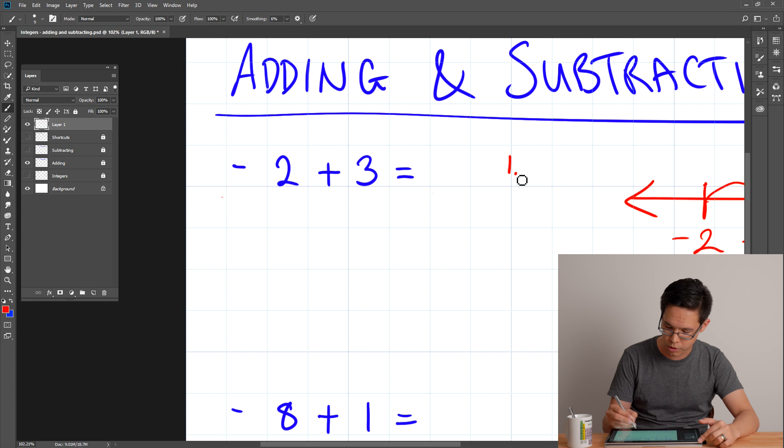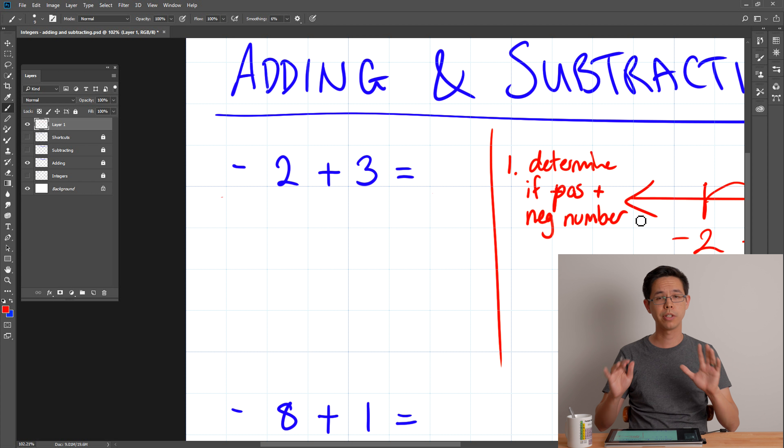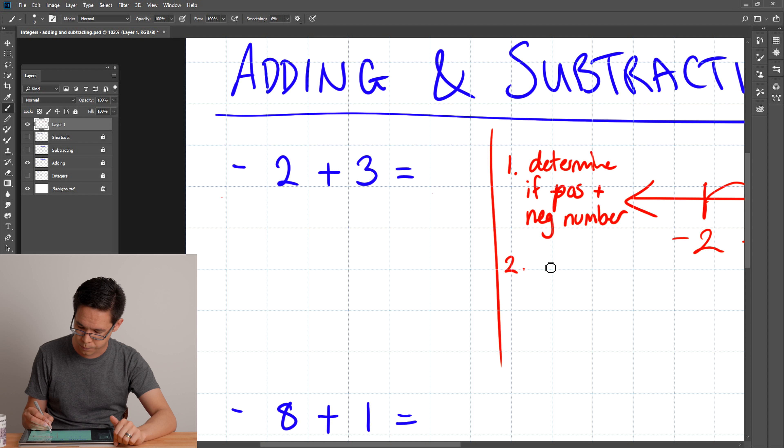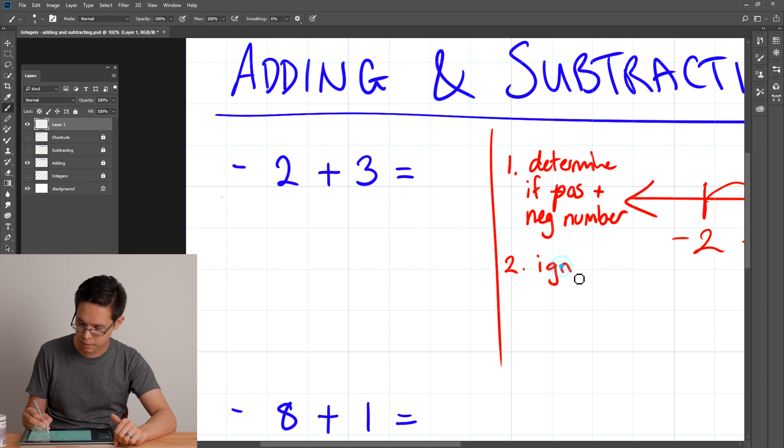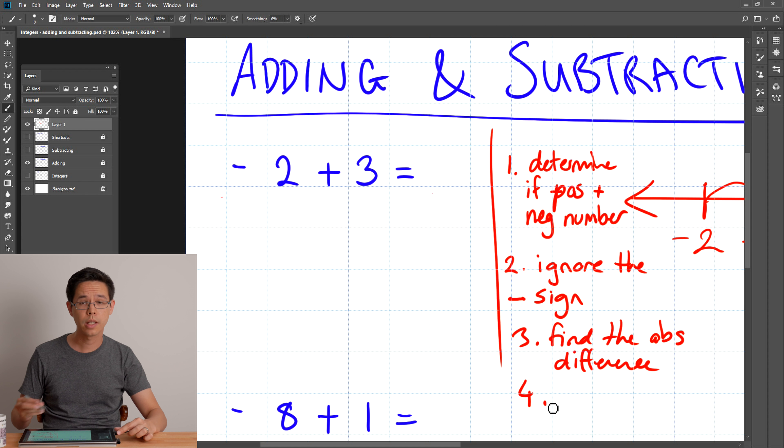The idea is to examine the problem to see if I can use this absolute difference. So first thing, if we think about the steps here, determine if pos plus neg number. So if we first determine if we are adding a positive to a negative number or vice versa, then we can go to the next step, which is my favorite part of the trick, to ignore the sign. So we can ignore the negative sign for now. Step three is we're going to find the absolute difference. And our last step to this trick is to put that negative or positive sign back on top as our last step to make sure that we are operating in the right direction.